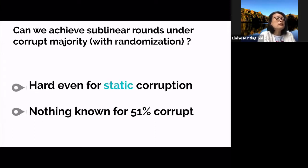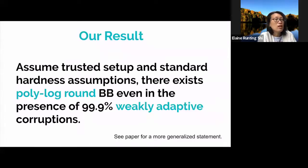To summarize, the problem we care about has been open since the 1980s, and quite surprisingly, nothing is known even for 51% corrupt, and even under static corruption, and allowing any reasonable setup and cryptographic assumptions.